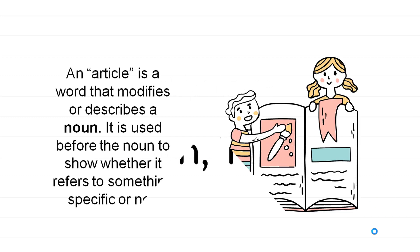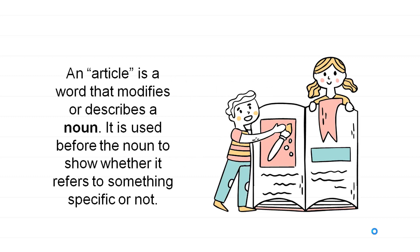When we talk about articles, we have three articles: A, AN, and The. Basically, an article is a word that modifies or describes a noun. It is used before the noun to show whether it refers to something specific or not. So an article is always used before a noun.